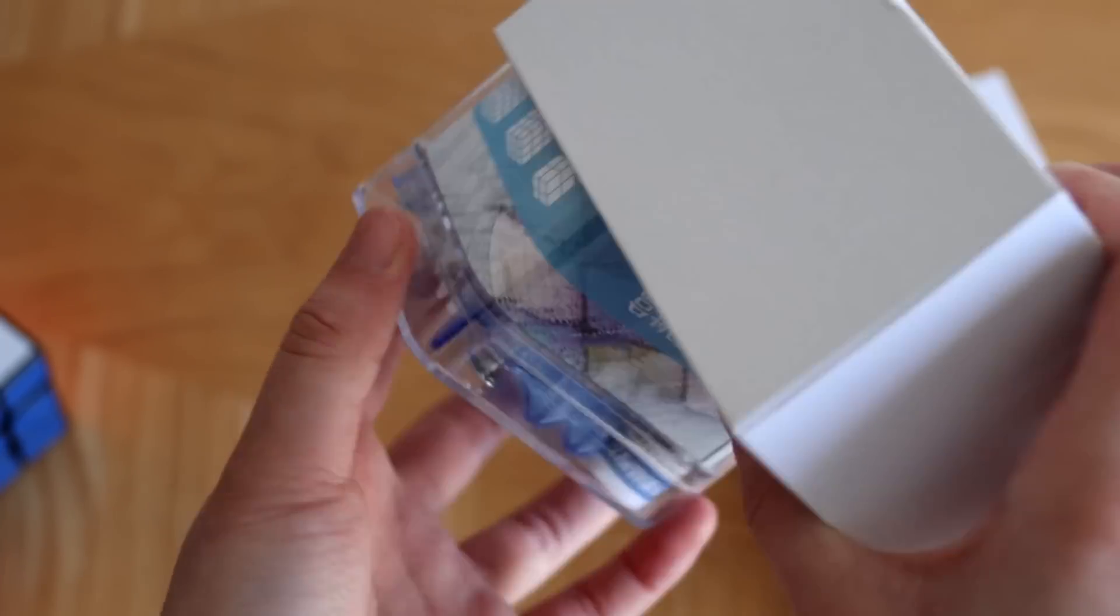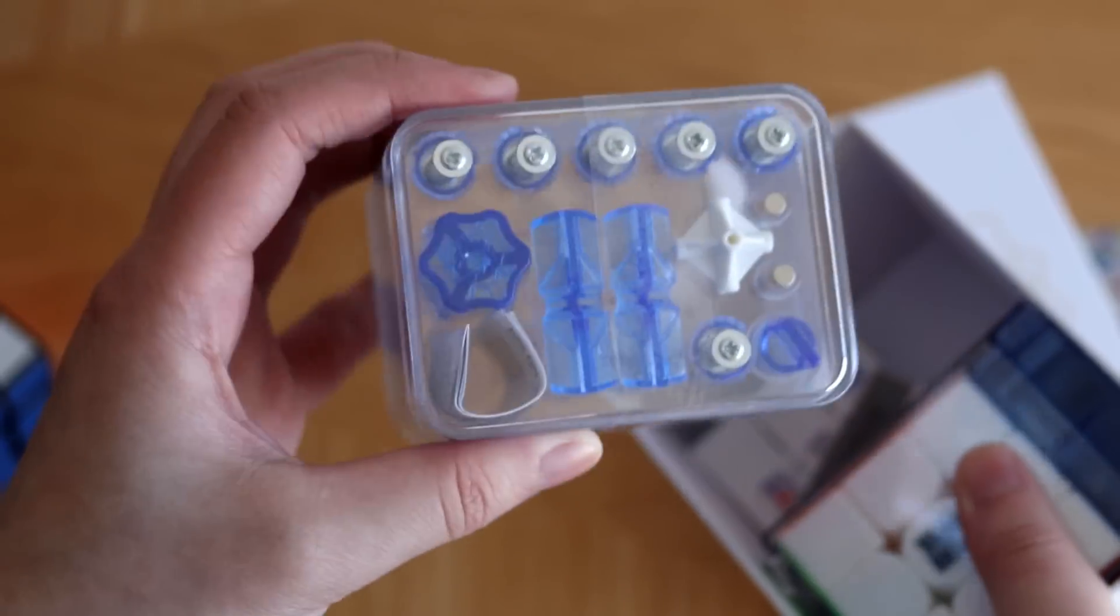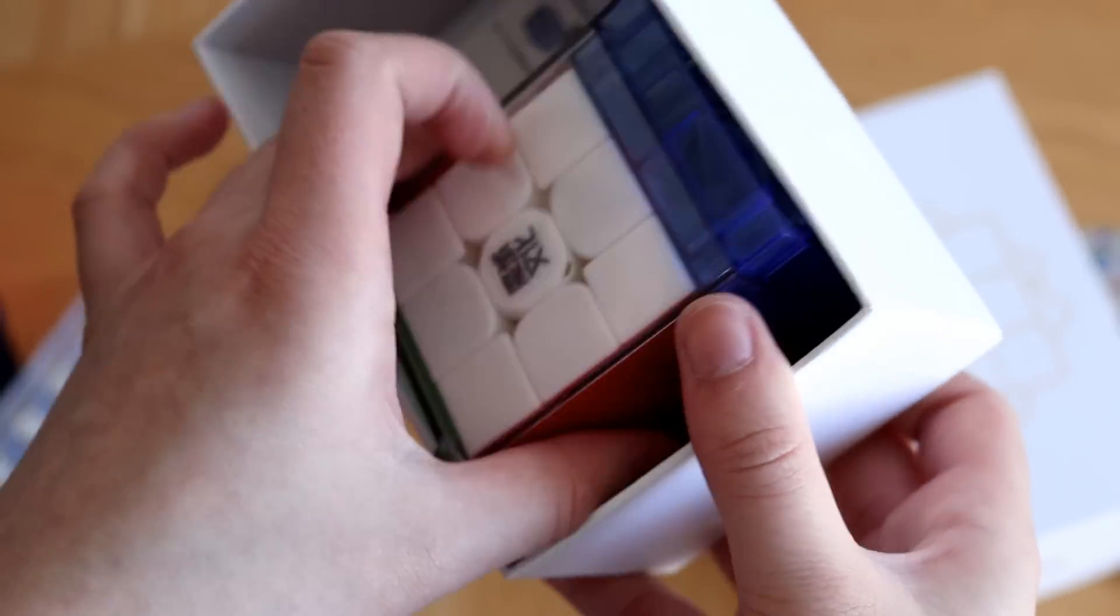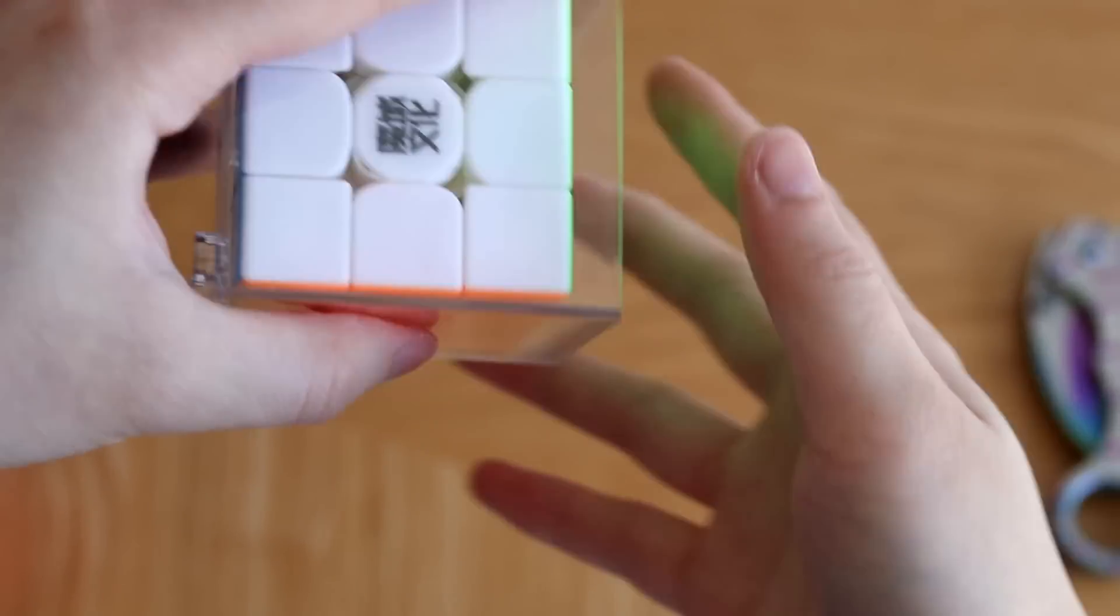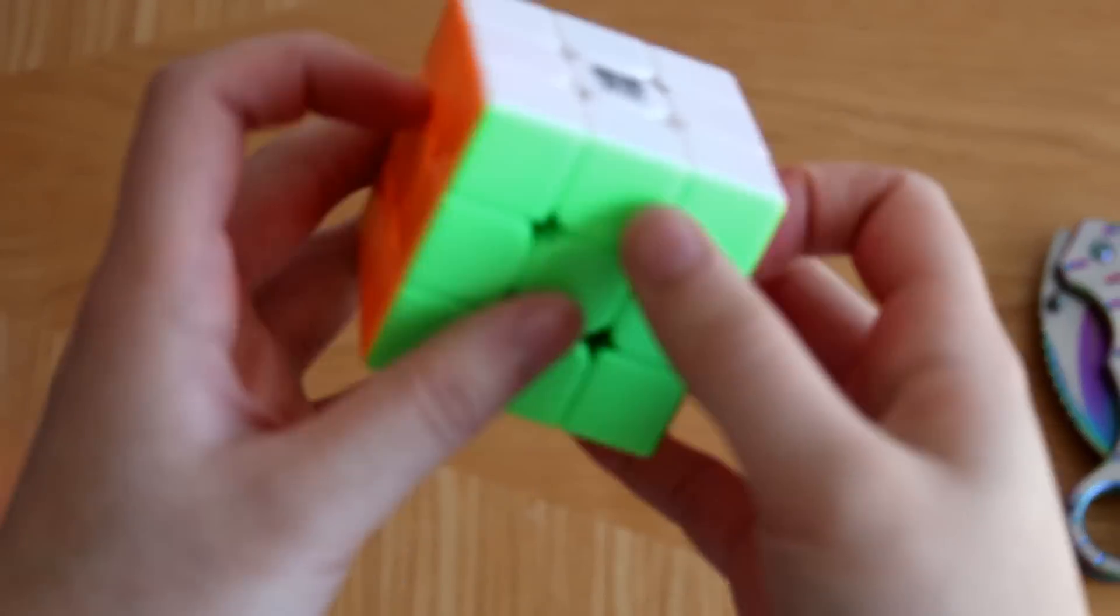Alright, so here it is. Same stuff here, we have the accessories box with all the replacement things which is really nice to have on hand. And the cube. So this magnetic version actually comes with the same magnets that were in the GTS3 LM.